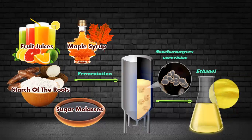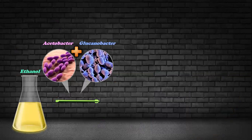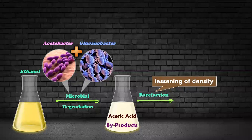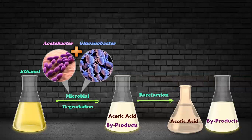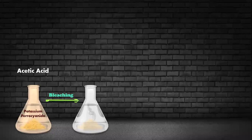After fermentation, what we get is ethanol. This ethanol is further broken down by Acetobacter and Gluconobacter, which give rise to acetic acid and its byproducts. These are then separated by rarefaction, that is by lessening the density. We then take the acetic acid and add a bleaching agent called potassium ferrocyanide, which gives it the pure white or transparent color that vinegar has.